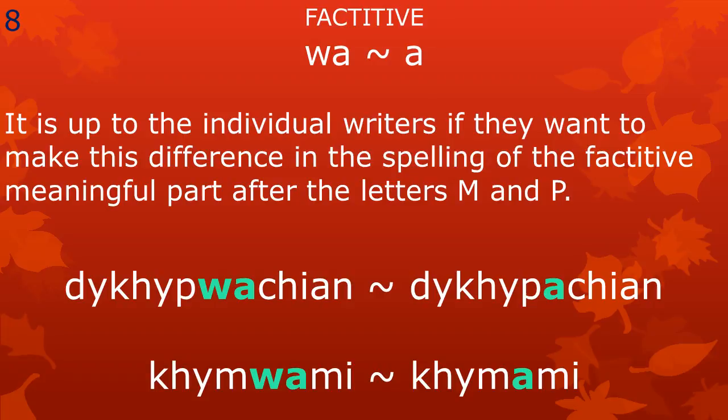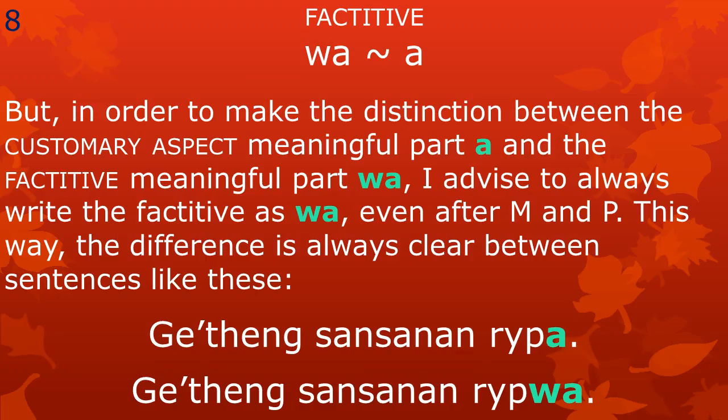So, depending on their preferred pronunciation, some people may write dkpwachian while others write dkpachian. Some people may write khmwami while others may prefer to write khmami. However, in order to make the distinction between the customary aspect meaningful part a and the factative meaningful part wa, I advise to always write the factative as wa, even after ma and pa. This way, the difference is always clear between certain sentences.